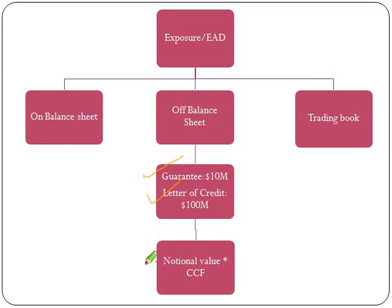Let's take an example where ABC bank has given a letter of credit of 100 million in favor of Mr. XYZ. In this case the bank has not given actual cash to XYZ, but instead has given a guarantee to a third party. So the total 100 million is not fully exposed as this event has not yet been triggered. To calculate EAD we multiply this notional of 100 million by the CCF, which is the credit conversion factor — we will cover this in a separate video. Assuming the CCF is 50%, our EAD will be 100 million × 50% = 50 million.